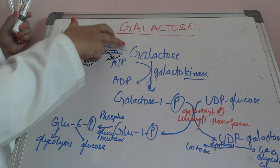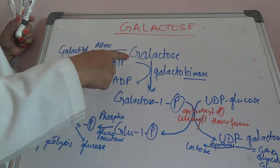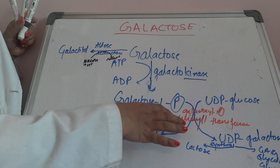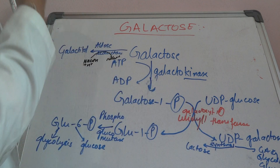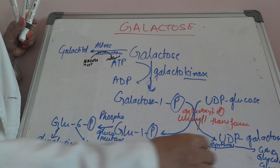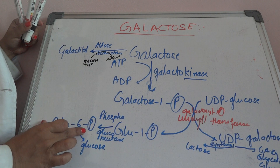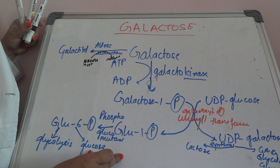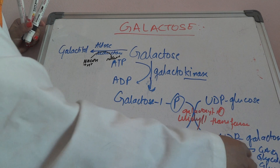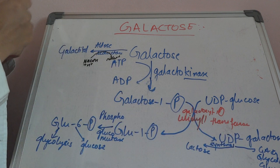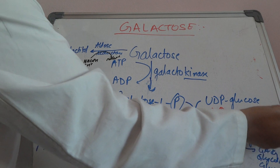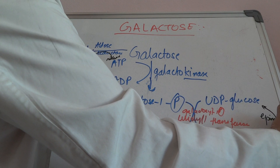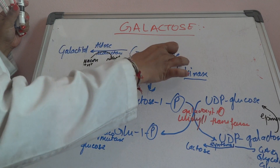To summarize: galactose from lactose or lysosomal degradation of glycolipids or glycoproteins is acted upon by galactokinase to form galactose-1-phosphate. This combines with UDP glucose via galactose-1-phosphate uridyl transferase to form glucose-1-phosphate and UDP galactose. Glucose-1-phosphate forms glucose-6-phosphate through phosphoglucomutase and can enter glycolysis or gluconeogenesis. UDP galactose can form lactose or glycolipids and glycoproteins, and can also re-form UDP glucose through UDP hexose-4-epimerase.